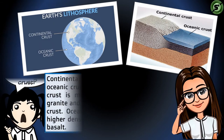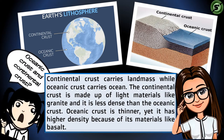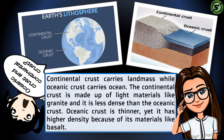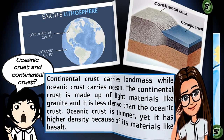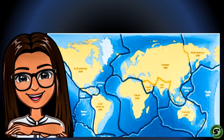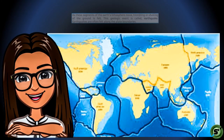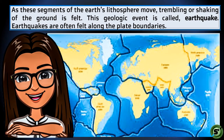Continental crust carries land mass while oceanic crust carries ocean. The continental crust is made up of light materials like granite and is less dense than the oceanic crust. Oceanic crust is thinner yet has higher density because of its heavy materials like basalt.